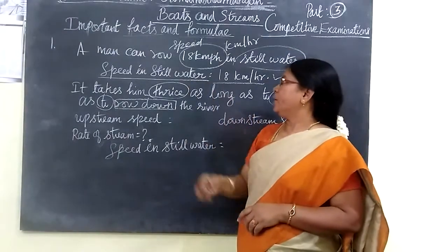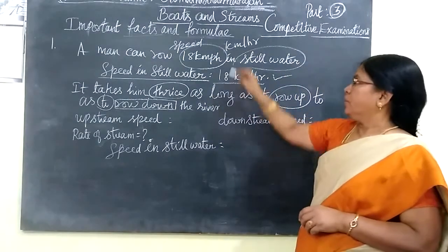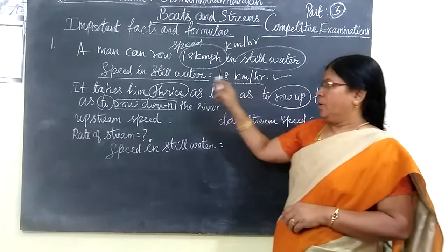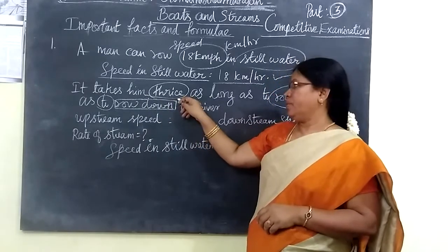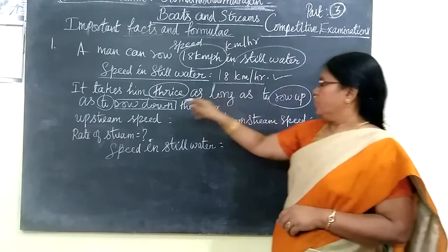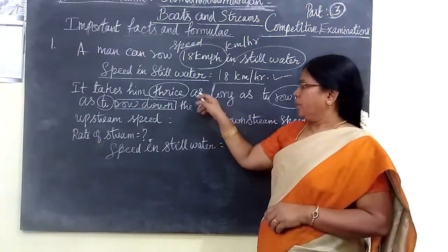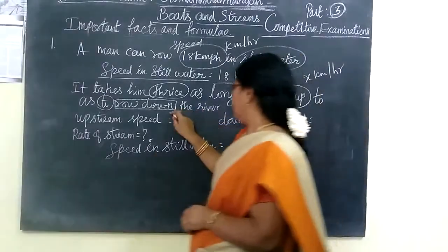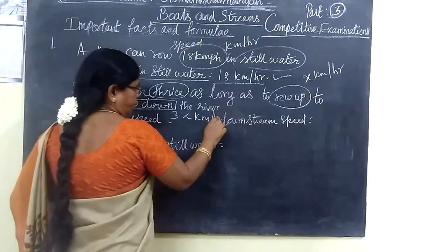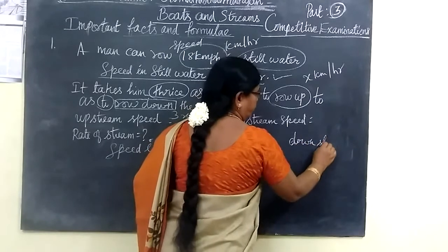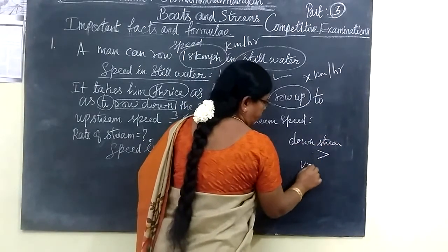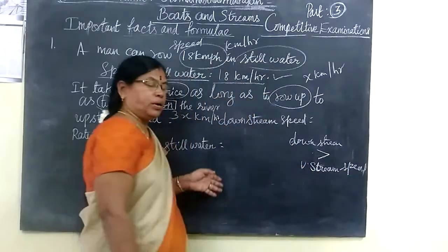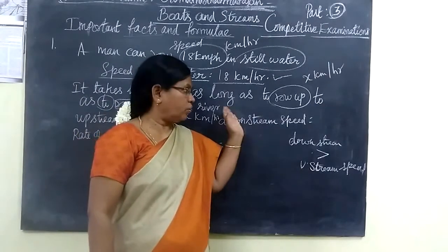See the first question: A man can row 18 km per hour in still water. So, speed in still water equals 18 km per hour. The next given information is it takes him thrice as long to row upstream as to row downstream. If he rows X km per hour upstream, then downstream means 3X km per hour, because downstream speed is greater than upstream speed.